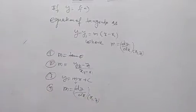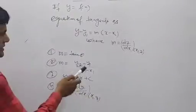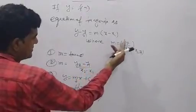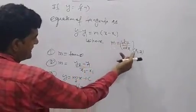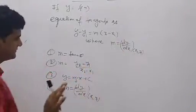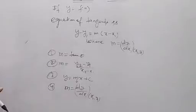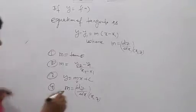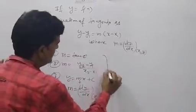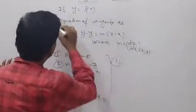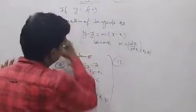Understood? So here, we have to use m is equal to dy/dx at (x1, y1). Any problem? Good. Now, this is the first formula — equation of tangent.